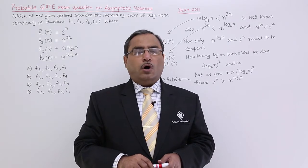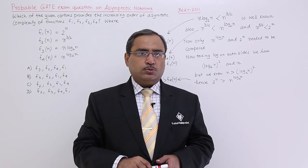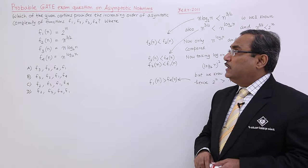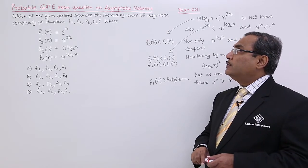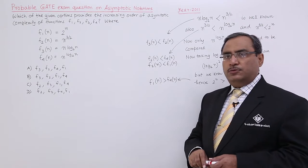Let us solve another problem on asymptotic notations from the GATE question paper 2011. The question is, which of the given options provide the increasing order of asymptotic complexity of functions f1 to f4?